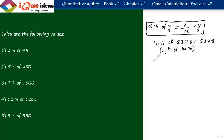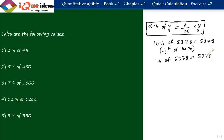Similarly, to find 1 percent of 5378, go to the end and leave two digits from the end and place a decimal. So it becomes 53.78. Basically, to find 1 percent, we take one-hundredth of the given number.